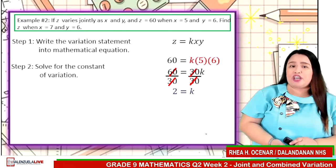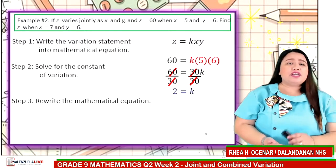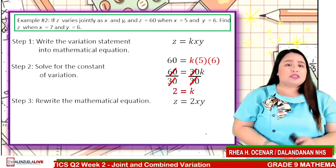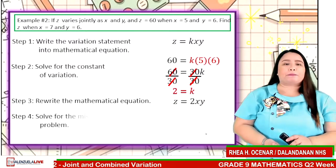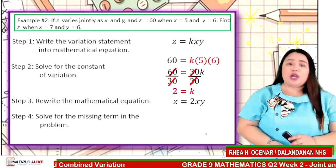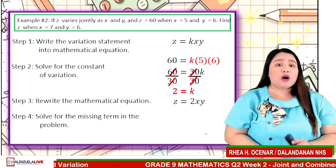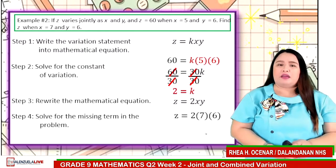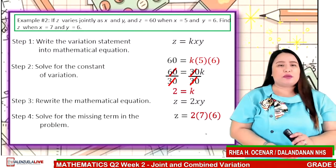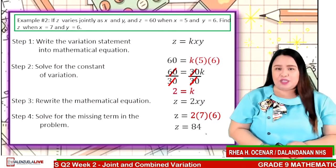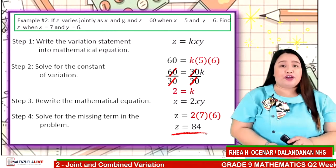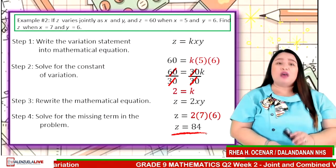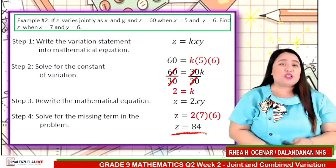Therefore, the value of the constant of variation is 2. Using the value of the constant of variation, we have Z is equal to 2XY. Since we need to find Z when X is 7 and Y is 6, we have Z is equal to 2 times 7 times 6. Simplifying, we have Z is equal to 84. Therefore, Z is equal to 84 when X is equal to 7 and Y is equal to 6. Do you understand now the joint variation?